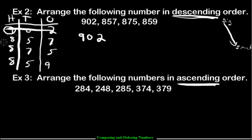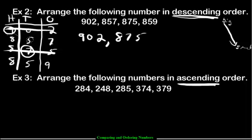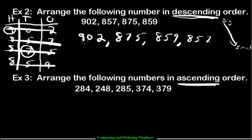The biggest of the remaining numbers — it's a tie in hundreds, so we jump to the tens. We have a five here and a seven here, and seven is bigger than all other tens, so 875 is next. Now for the next biggest: hundreds tied, tens tied, so we go to the ones. We have nine ones and seven ones, so 859 is next. And then the smallest number is 857. That's our descending order — biggest to smallest.